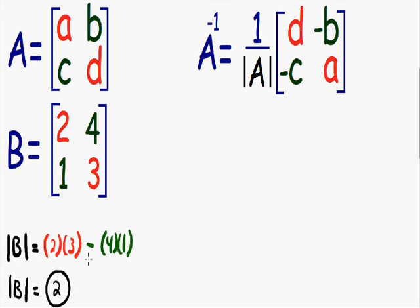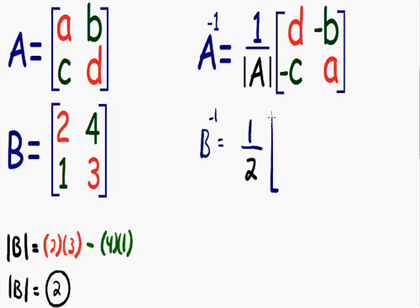We know from our formula that the inverse of A is equal to 1 over the determinant of A. So the inverse of matrix B is going to be equal to 1 over the determinant of matrix B. We know the determinant of matrix B is equal to 2, so I'm going to replace the determinant symbol with the number 2. Now the only thing we need to do is fill in the inside of our 2 by 2 matrix.